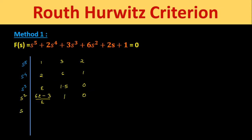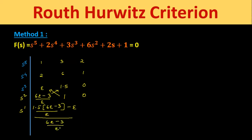Now we construct the s¹ row. Multiplying through gives 1.5×(6ε − 3)/ε − ε, all divided by (6ε − 3)/ε, and we get 0 for the second element. For the s⁰ row, the first element equals a₅ = 1, as given — and computing directly from the table also gives 1.